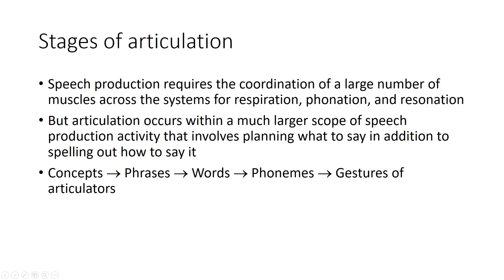The process of speech production that we've been studying requires coordinating all of the different muscles for respiration, phonation, and articulation and resonation. That speech articulation occurs within a larger scope of speech production activity that involves planning what you want to say, in addition to spelling out how you're going to say it—going from having some concept you want to express, to a group of phrases or sentences, each composed of individual words, each containing phonemes, and then producing those speech sounds through gestures or articulators.